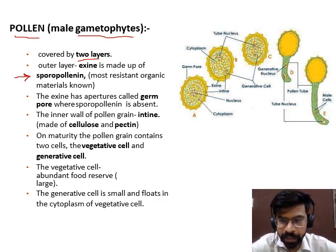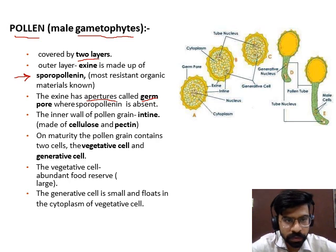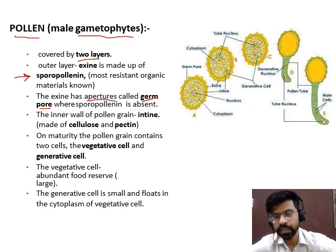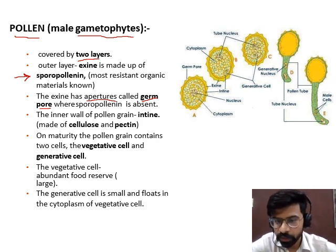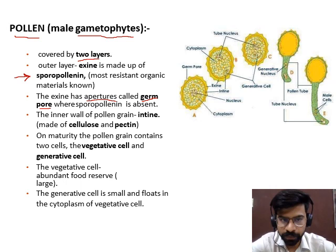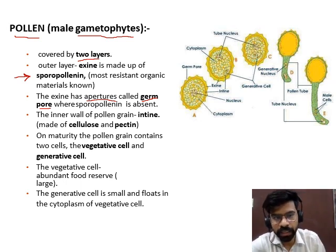This organic material does not rupture under the action of any enzyme. The exine layer has an aperture known as the germ pore. The germ pore is the area where this organic material is absent. The inner layer is known as intine; inner layer is continuous in nature. Intine is made up of cellulose and pectin.